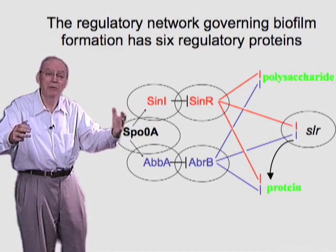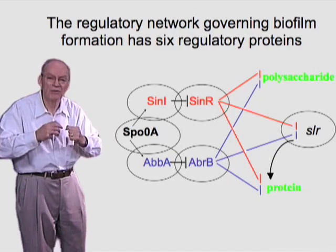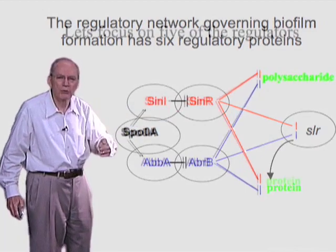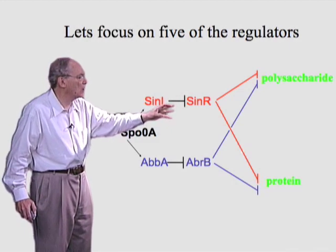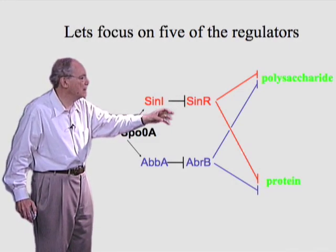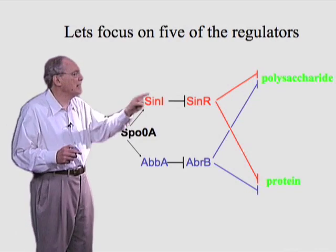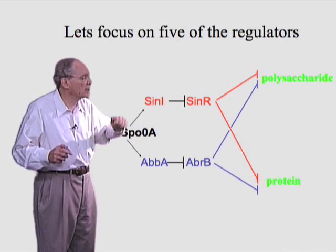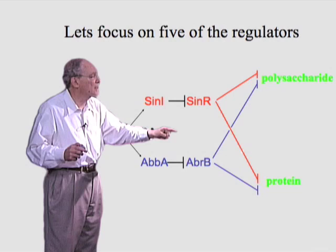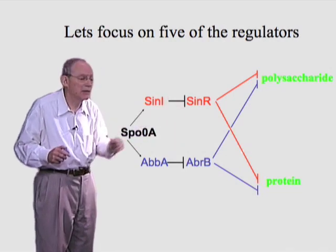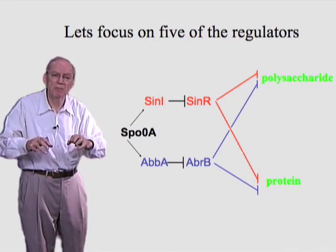This looks bewilderingly complex, but at its heart it has a simple logic. To simplify things, let's focus on five proteins: SinI, SinR, AbrA, AbrB, and Spo0A. SinR and AbrB are repressor proteins — they each repress both target operons. So SinR represses the polysaccharide operon and the protein operon, and likewise AbrB contributes to the repression of both matrix operons. Two different repressors help to hold both matrix operons off.